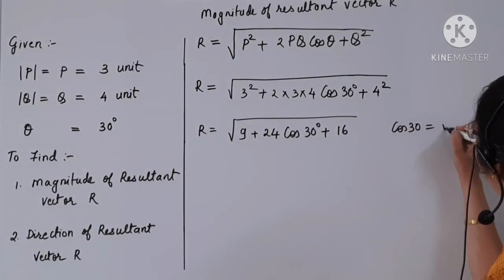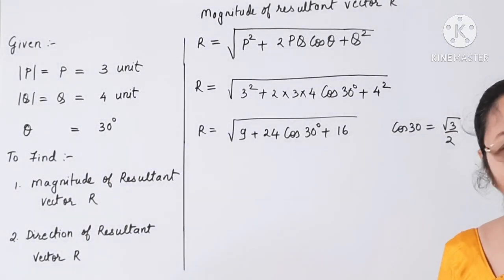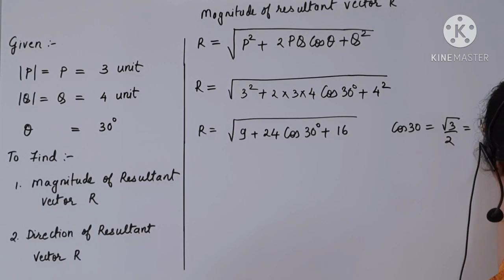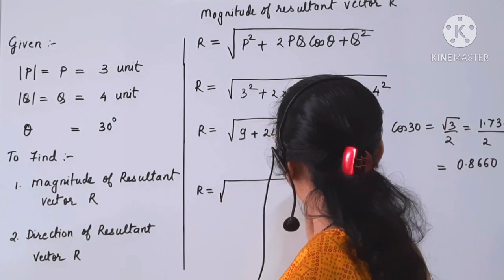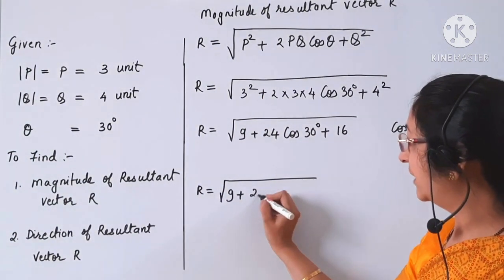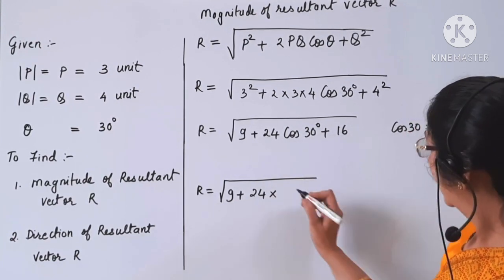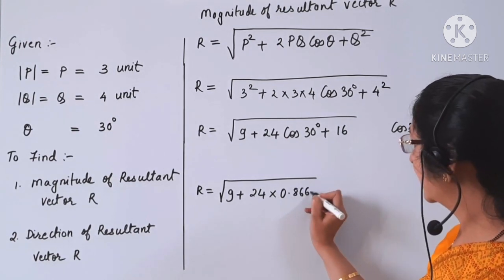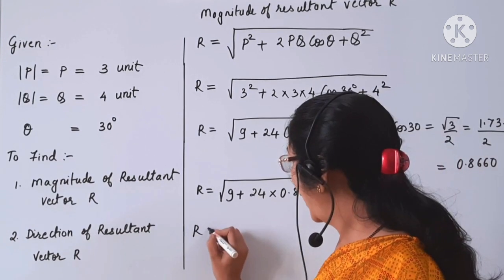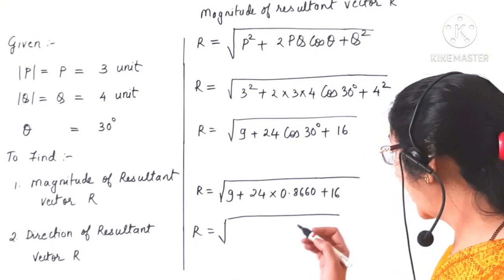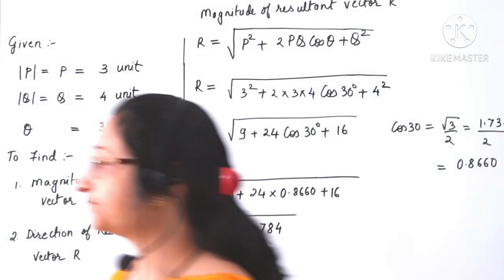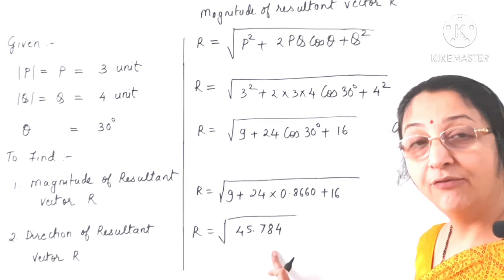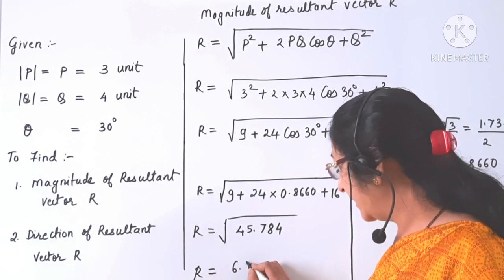Cos of 30 degrees is root 3 by 2. Root 3 is 1.732, so 1.732 upon 2 equals 0.8660. Therefore r equals under root of 9 plus 24 into 0.8660 plus 16, which gives under root of 45.784. So r equals 6.766 units.